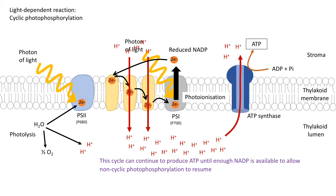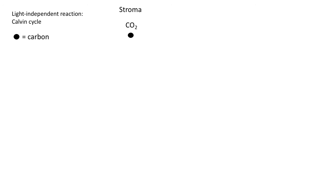Let's move on to the light-independent reaction, also known as the Calvin cycle. It was discovered by Melvin Calvin and his team. This occurs in the stroma, and we start with carbon dioxide. We'll go through the steps and I'll provide the text that you should have written down along with your diagram.